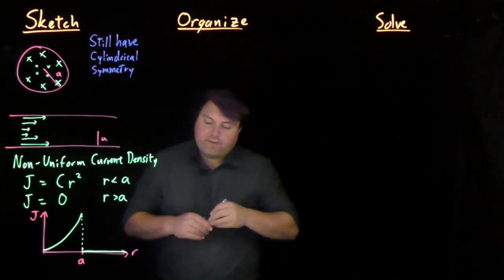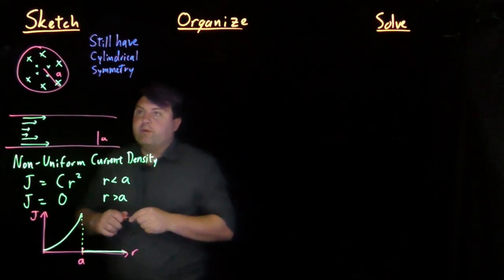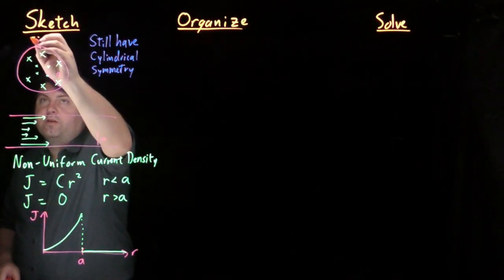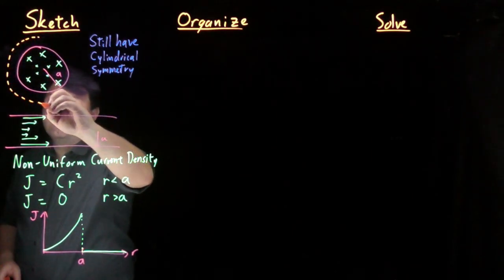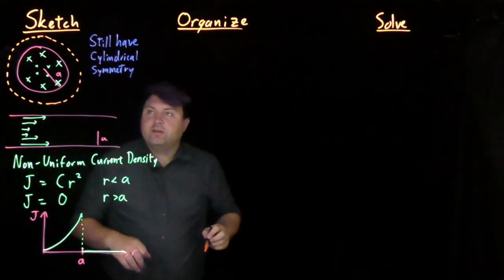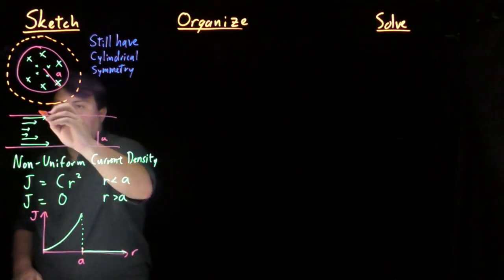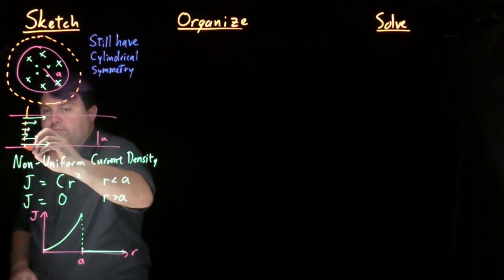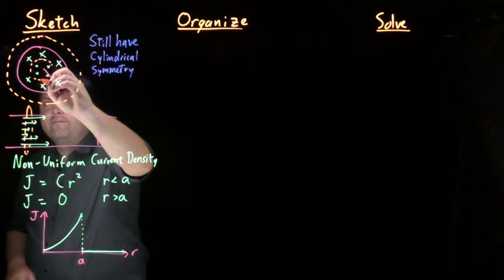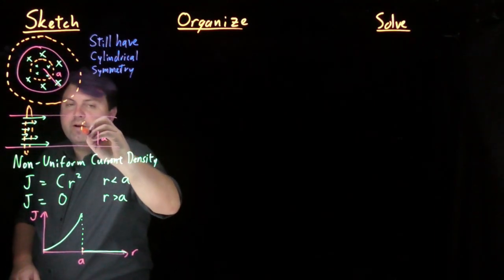If we still have our cylindrical symmetry, then we want our Amperian loops to still be circles. We'll have a circle outside of the wire, so represented like this in this perspective, but also one inside of the wire.